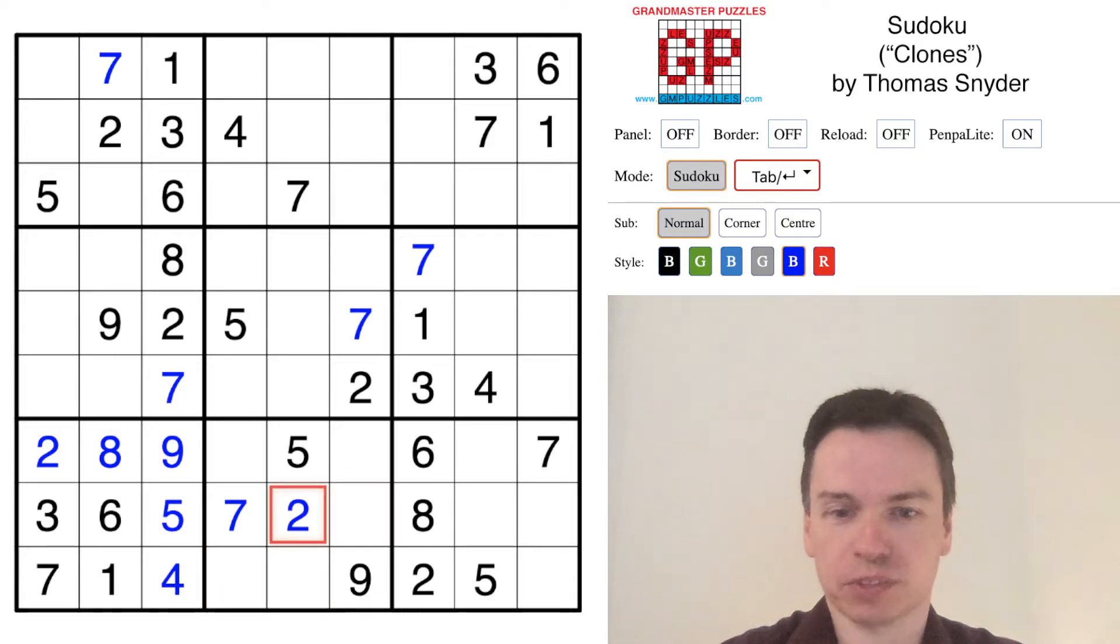Eight in one of these cells, but you don't know for sure which one yet. The two does go here. Looking to the lower right, we have one, three, four, nine to place, and the three has a unique spot just based off digits around it.